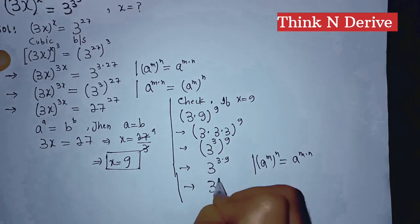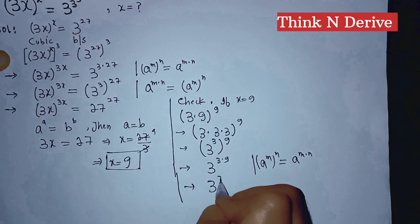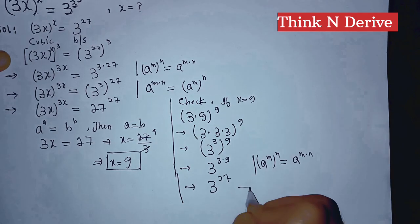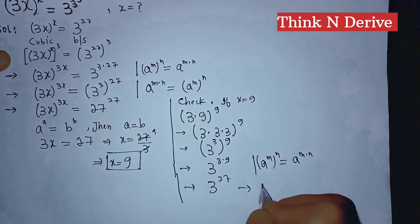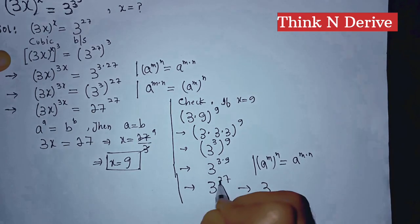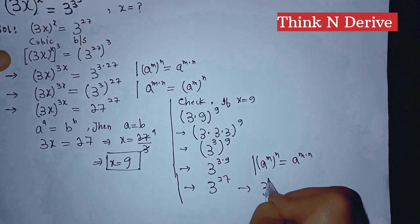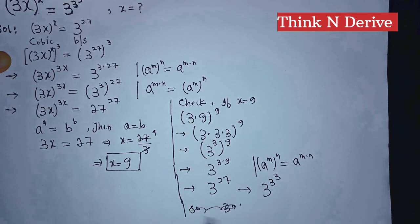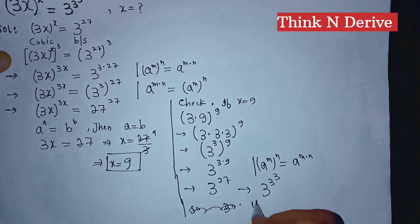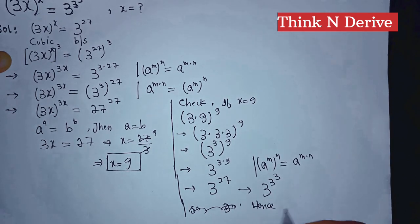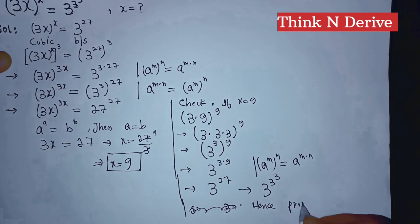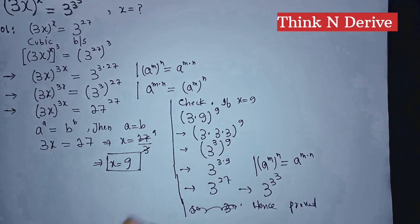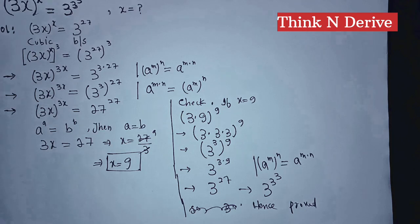3 into 9 is 27, so 3 to the power 27, which equals 3 to the power 3 to the power 3. Hence verified. Thanks for watching the video, don't forget to subscribe to the channel, see you in the next video. Thank you.